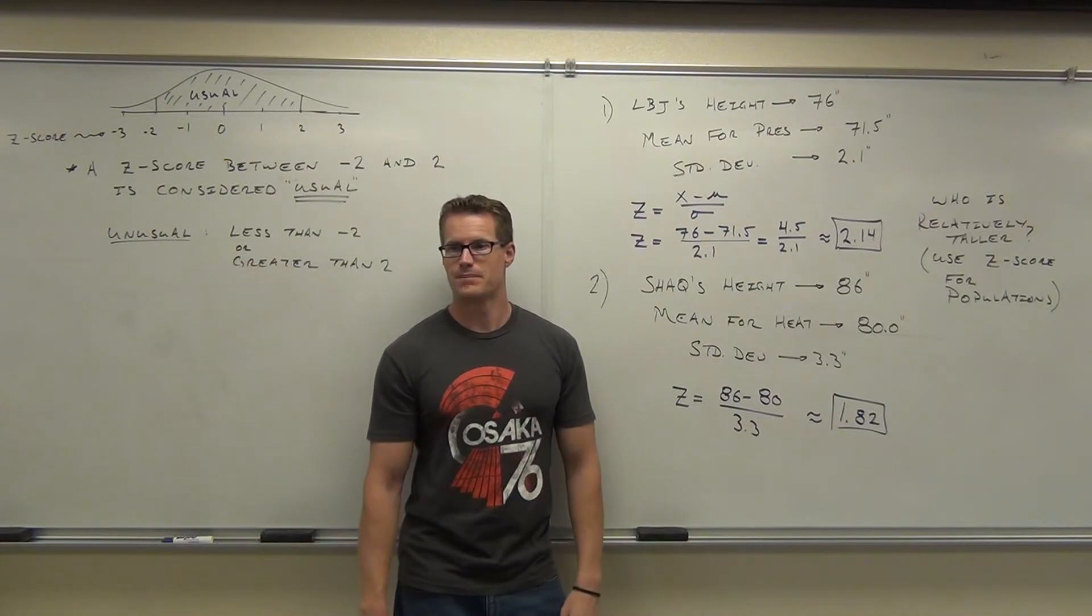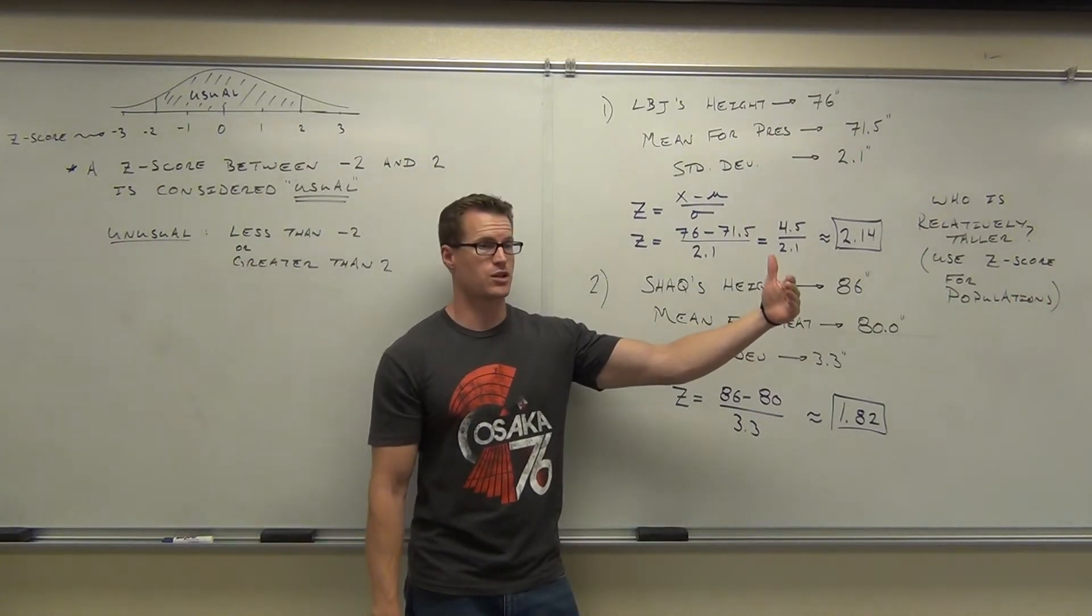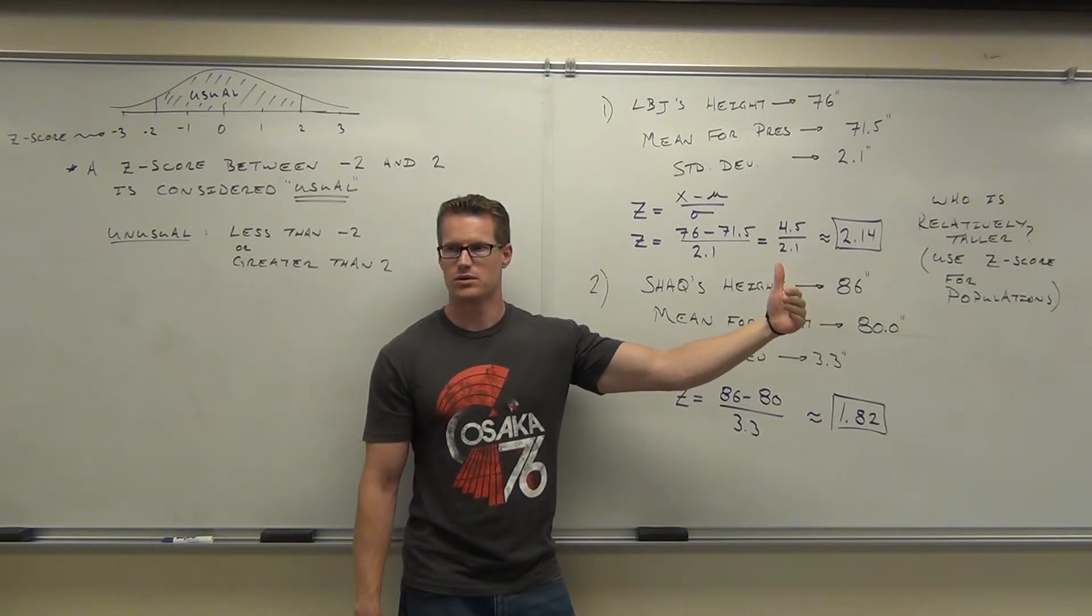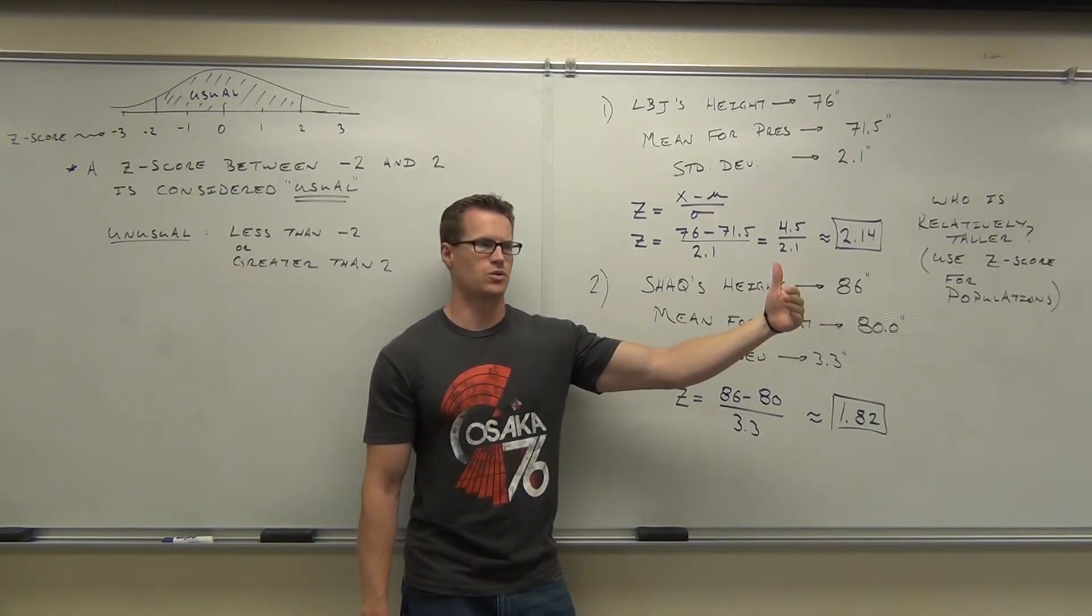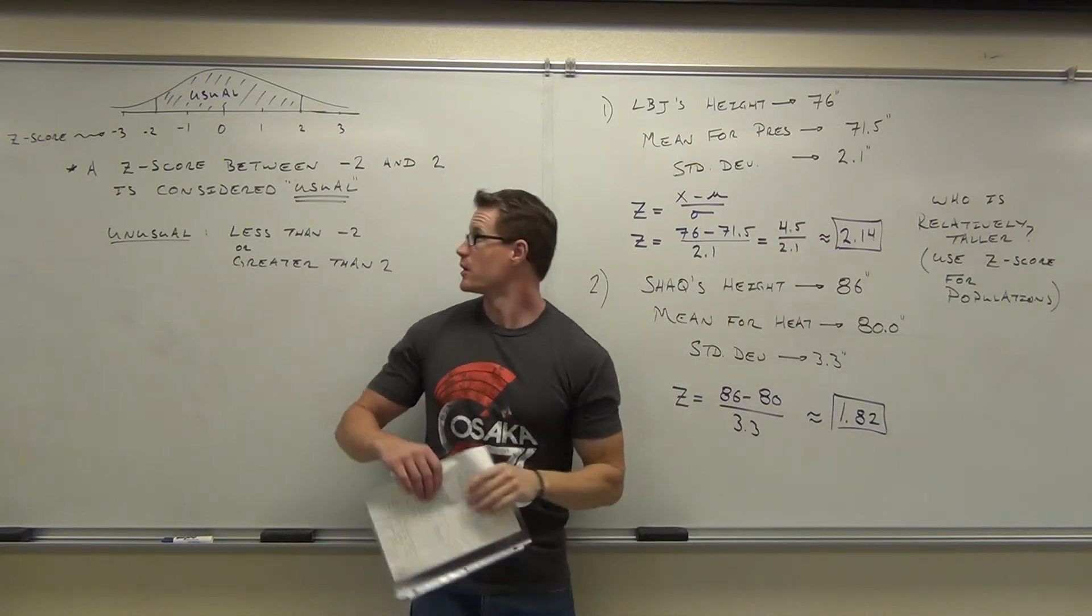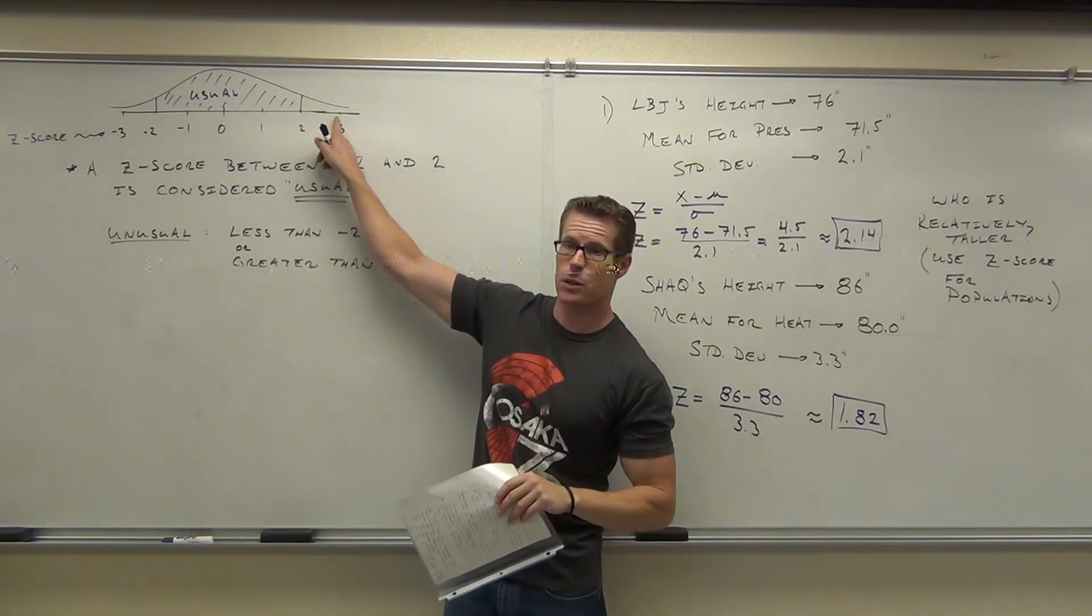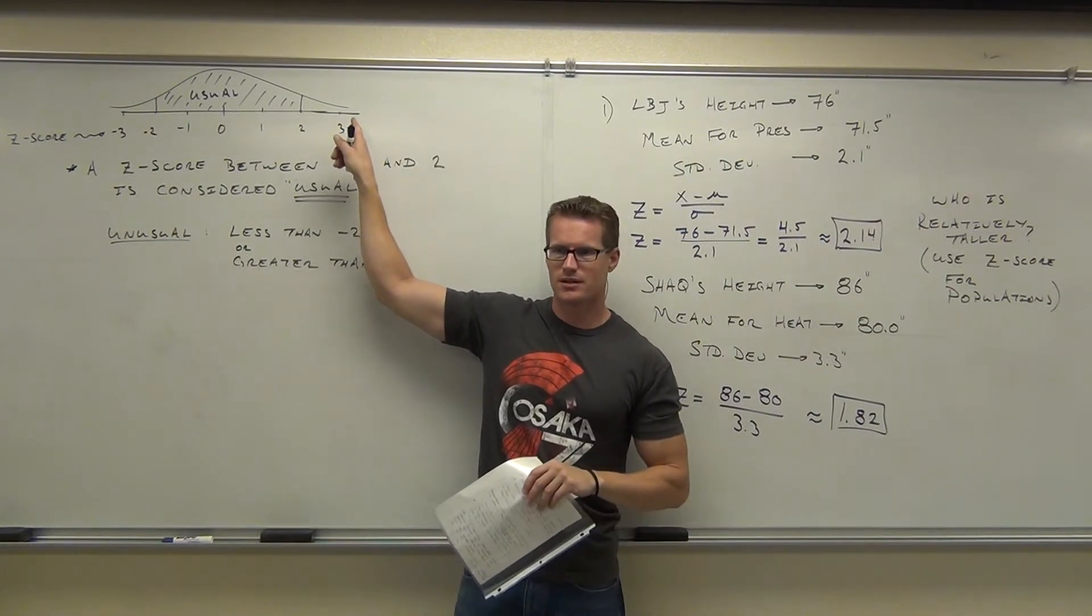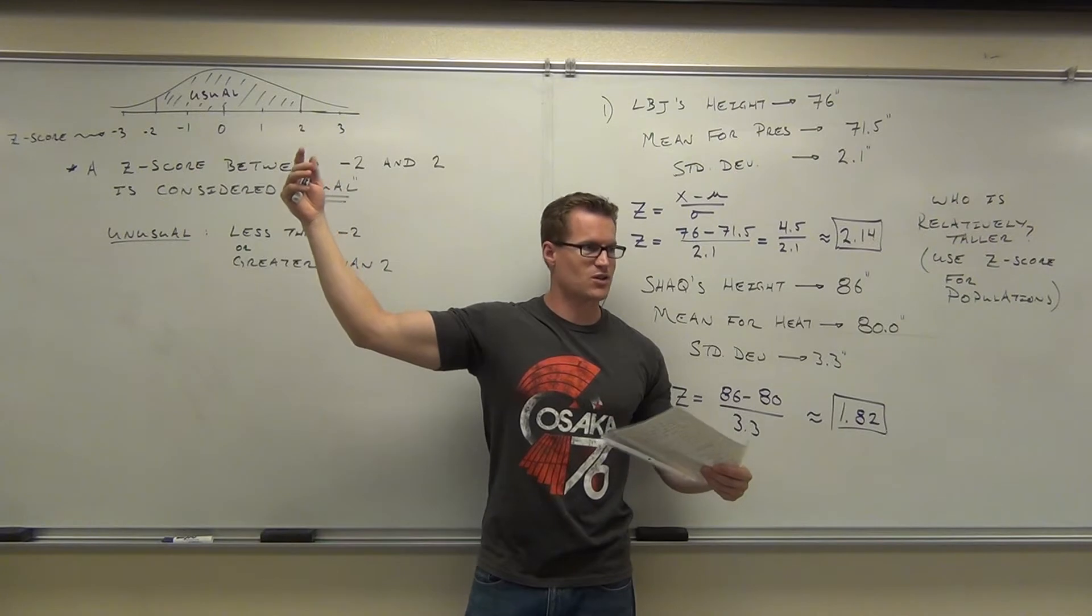I mean, it's close to two, so he's getting up there, but it's still considered usual. How about LBJ? Unusual. He crosses over that. Not by much though, right? He's not that unusual. Let's say we had a Z score of four. Usual or unusual? Very unusual. Very unusual. That's way out there. Three. Three would be very unusual, okay? Past three. Four? Oh my gosh, he'd be like a giant. He'd be like Shaq being president.